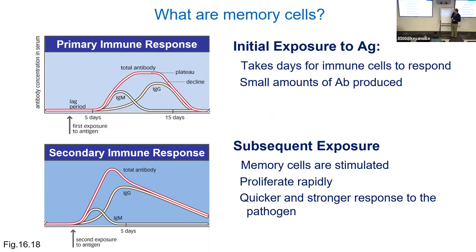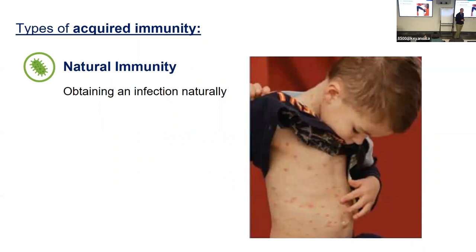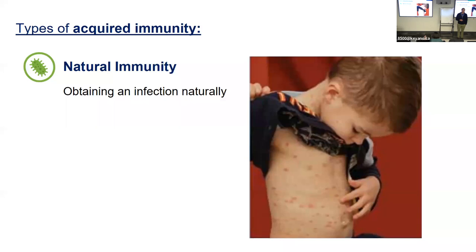Immunity is broken into four categories. The first type is natural immunity — where you get the actual infection. Chicken pox was a rite of passage: 95% of people before the vaccine was popular got chicken pox by age 12, and most would have decent immunity lasting for decades — often until about age 60 when you might get shingles.